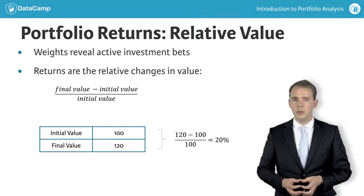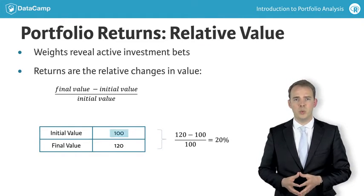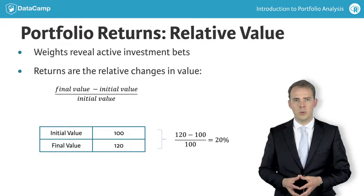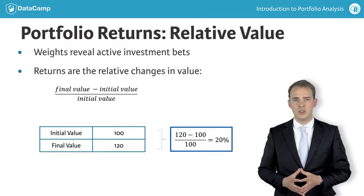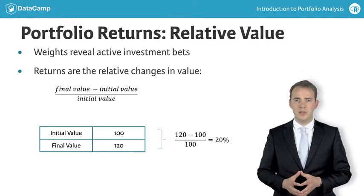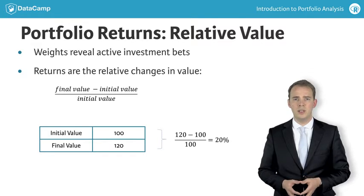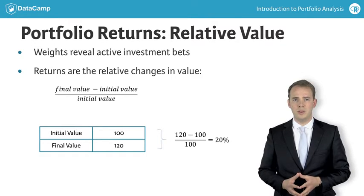As an example, suppose the initial value is $100 and the final value is $120. Then the return on that investment equals 20%, obtained by taking the difference between $120 and $100 and dividing it by $100.